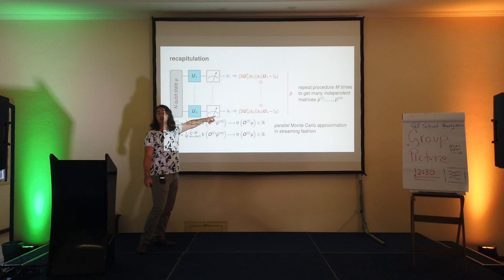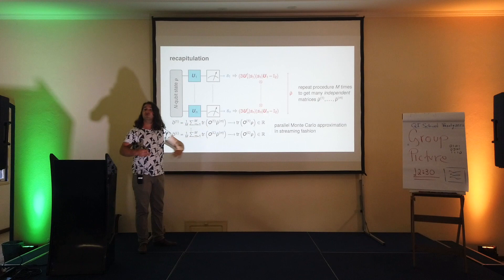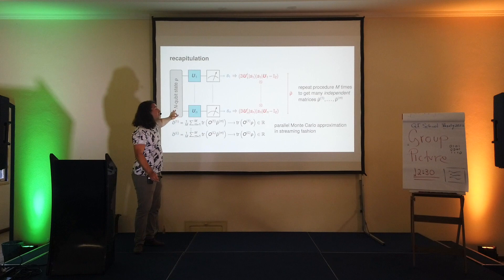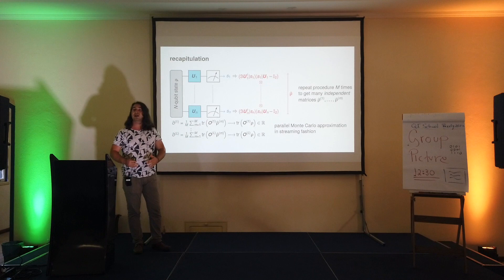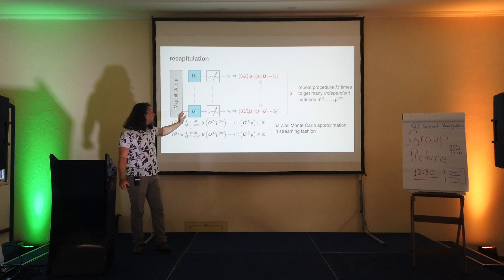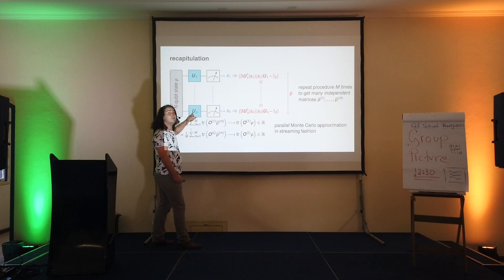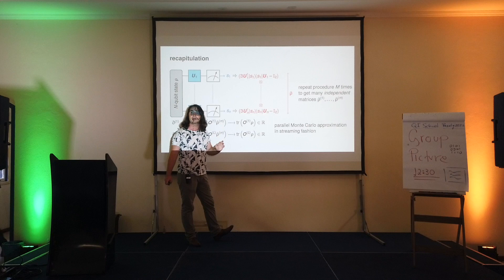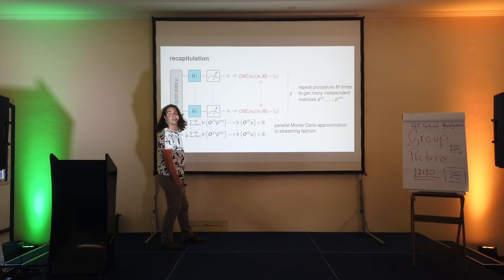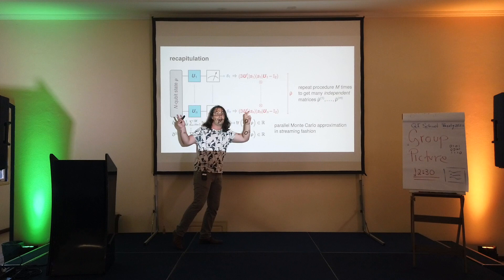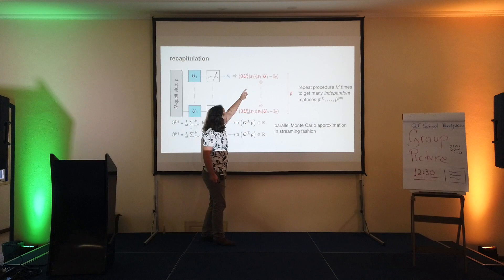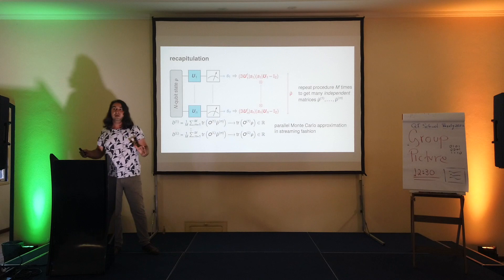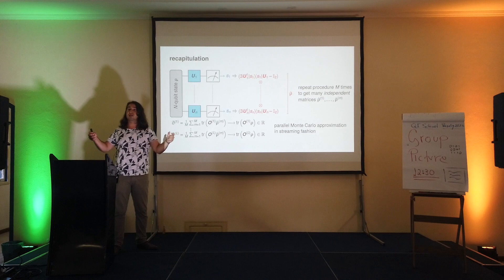Then we perform single-qubit measurements to get a bit string of outcomes. This bit string is random, but the underlying distribution knows something about the unknown quantum state. This was the key element we identified to start Monte Carlo approximations of the large system. We take individual bit strings and, remembering the unitary we applied, build single-qubit approximations of the unknown quantum system — designed so that if we repeat this many times it converges to the unknown state. Because this is an n-qubit state, we build an n-qubit Monte Carlo approximation, called a classical shadow, as a tensor product of single-qubit terms.